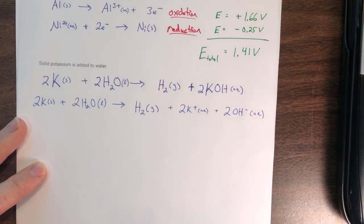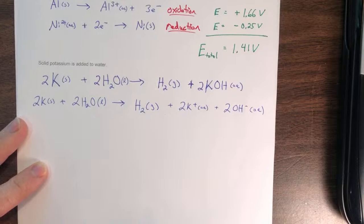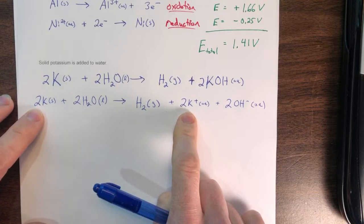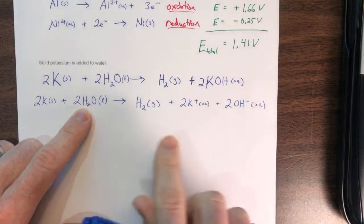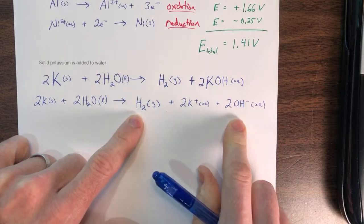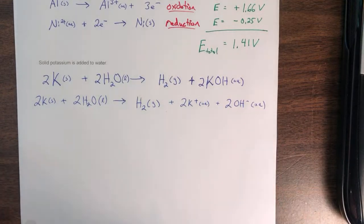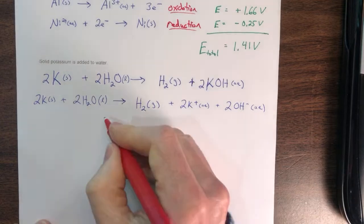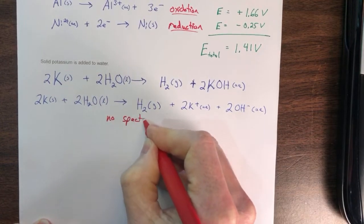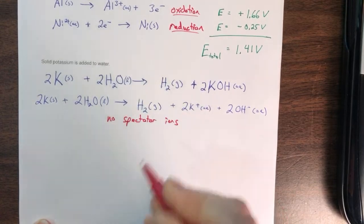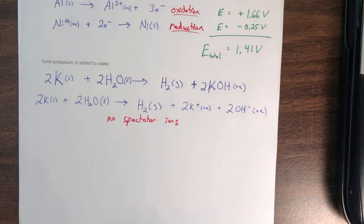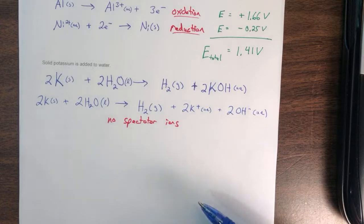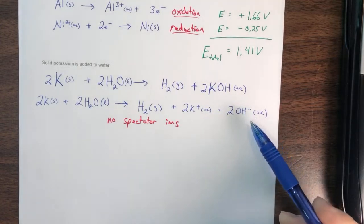Notice that because of this situation, we don't have any spectator ions. Potassium and potassium-plus — that changes. We have water, and there's no water over here. And then we have H₂ gas and OH⁻. So there is no spectator ion in this case. Since there's no spectator ions, we don't need to write out the net ionic equation because the net ionic equation is the same as the full ionic equation.